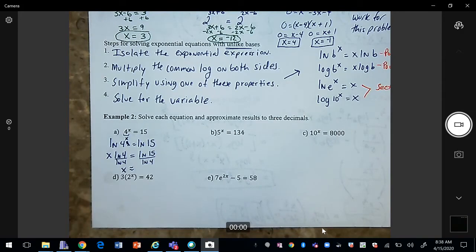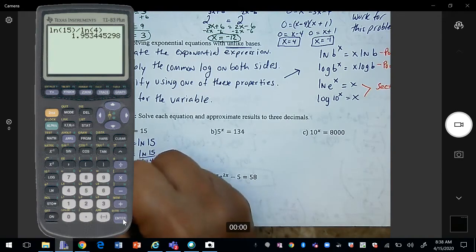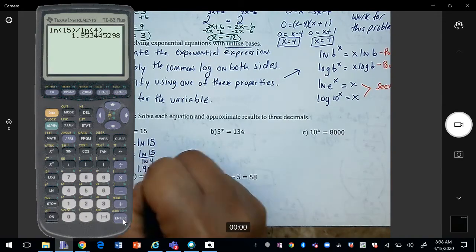So we can use our calculator. And we have natural log of 15 divided by natural log of 4. Enter. So this is approximately 1.953.